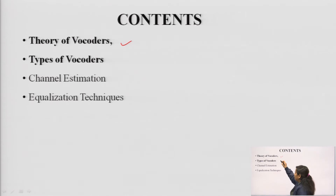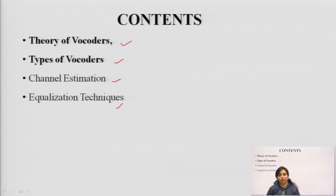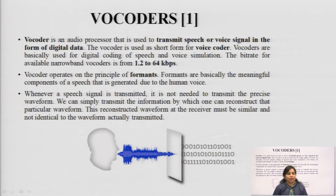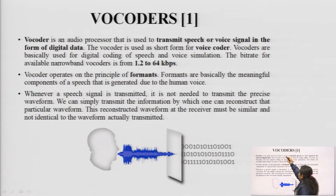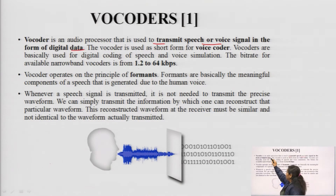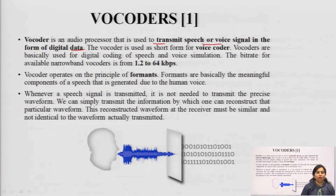Different types of vocoders are going to be discussed. We will also discuss channel estimation and equalization technique, which is a part of voice coding technique to equalize the effect of noise on the processed signal. A vocoder is an audio processor that is used to transmit speech or voice signal in the form of digital data, which means we require an ADC converter — an analog to digital converter — to convert the analog or speech signal into digital data.